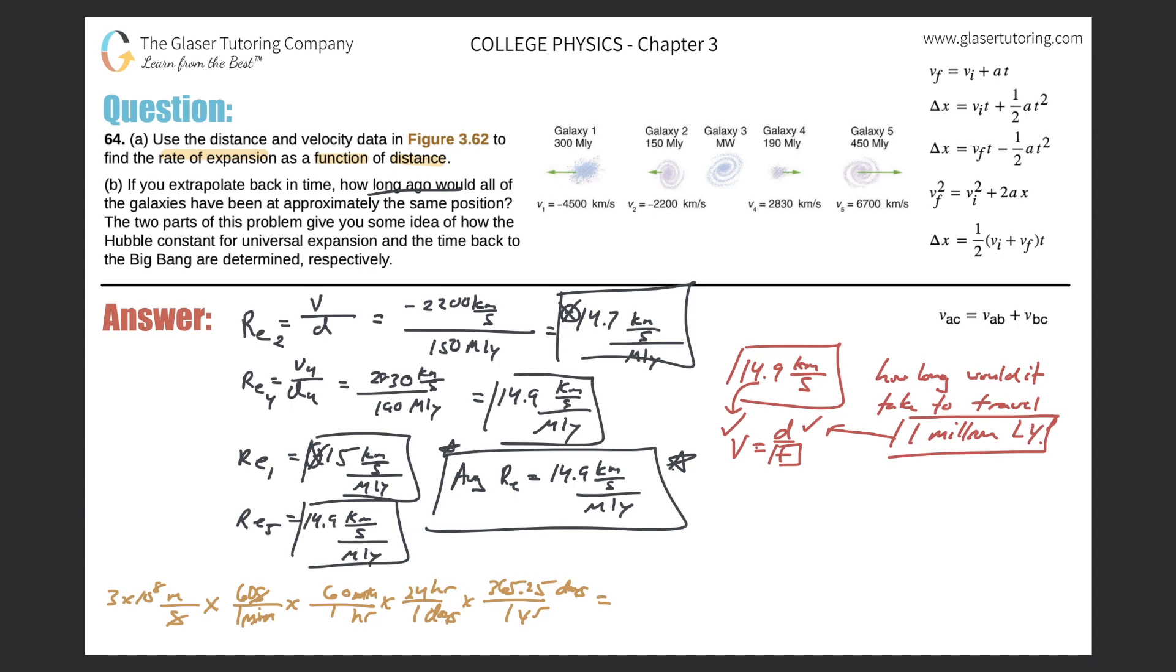This now would give me the distance of a light year. So 3 times 10 to the 8 times 60 times 60 times 24 times 365.25. We get a value of 9.47 times 10 to the 15 meters per year. But remember, the definition of a light year is the distance light travels in one year. So I'm just going to get rid of this denominator. This is one light year, this distance. But now it's not per one light year, it's per one million of them. So we simply multiply this by 10 to the 6 to represent a million light years.